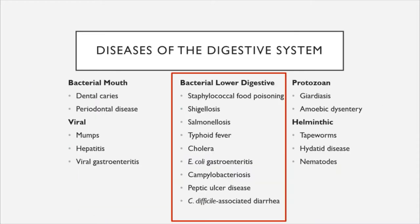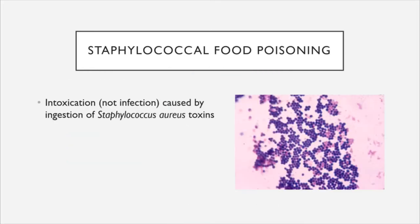Now we're moving on to bacterial diseases of the lower digestive system, progressing down into the stomach and intestines. First, let's take a look at staphylococcal food poisoning. We discuss it here because it is caused by a bacterium, but it is technically not an infection — it's an intoxication. It's caused by ingesting not Staphylococcus aureus itself, but the toxins generated by it.